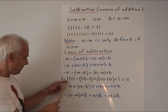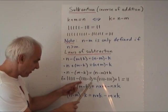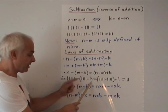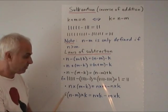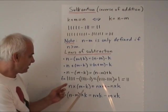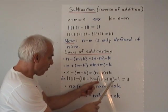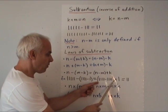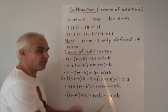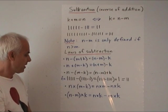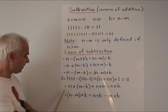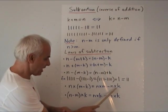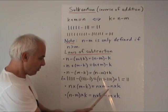Let's illustrate that last one with an example: five minus (four minus one). Four minus one is three, so five minus three should be two. And indeed, if we take five minus four and add one, we get one plus one, which is two.